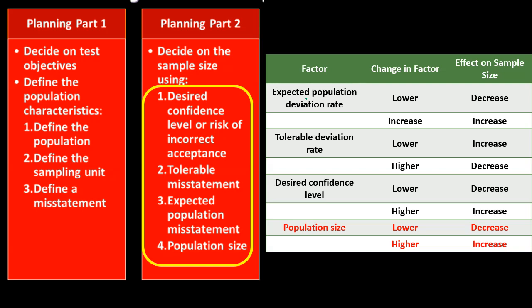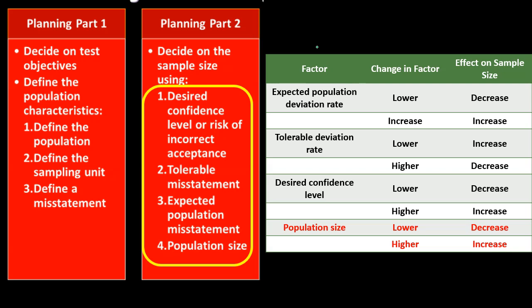Then we decide on the sample size using four inputs: the desired confidence level or risk of incorrect acceptance, the tolerable misstatement, the expected population misstatement, and the population size.